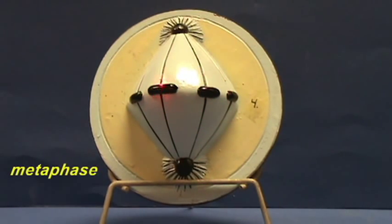These microtubules are going to push and pull these chromosomes so that they will become aligned at a plane in the middle.